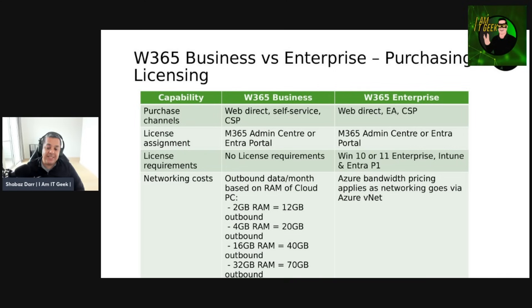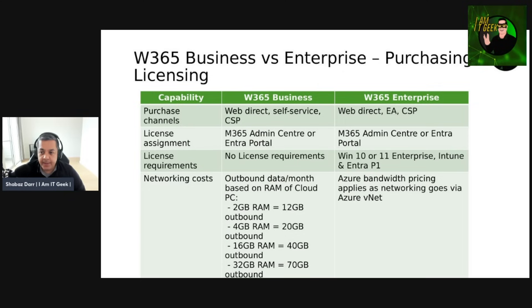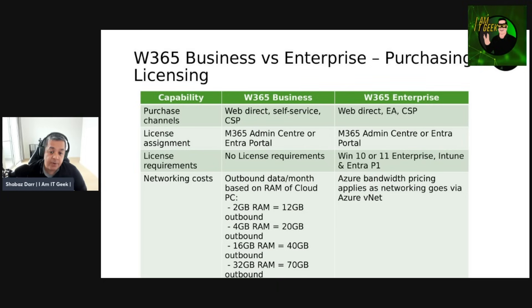Let's talk about purchasing and licensing now. From a purchase channels perspective, Windows 365 Business you can buy from web direct from the M365 admin center, self-service, and also from a CSP. With Enterprise, it's available web direct, through EA (Enterprise Agreement), and also CSP as well.